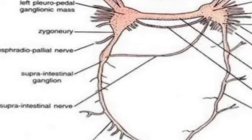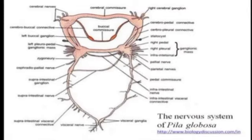From here, a number of nerves will arise from these ganglia, connectives, and commissures. They will supply nerve signals to all body parts. This is the nervous system of Pila — it is known as zygoneurous. Hopefully you have understood this. Thanks for watching. Have a nice day.